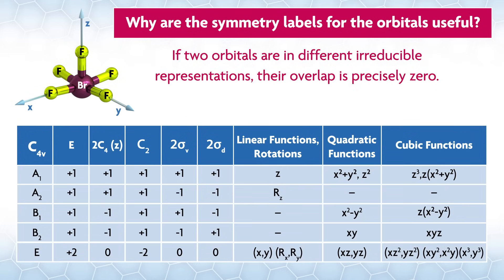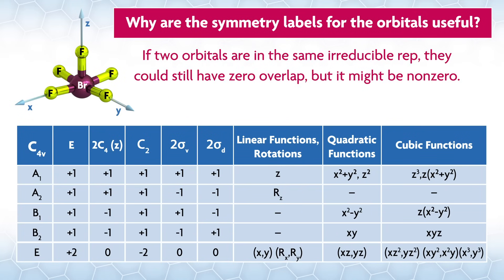In other words, if two orbitals are in different irreducible representations, their overlap is precisely zero. If two orbitals are in the same irreducible representation, they could still have zero overlap, but it might be non-zero.